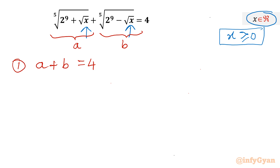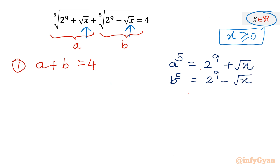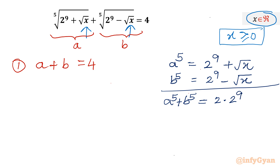Now I will use substitution. The first radical equals a, so I can write a to the power 5 equal to 2 raised to the power 9 plus square root x. Similarly for b, b to the power 5 equals 2 raised to the power 9 minus square root x. Now simply add both equations: a⁵ plus b⁵ equals 2 times 2 to the power 9, and the square root x terms cancel, giving 2 to the power 10.